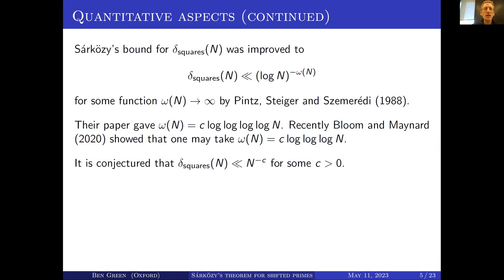In the other direction, it's conjectured that there's a power saving. What could be true is remarkably stronger than what's actually known. It's conjectured that if you take a subset of {1,...,n} of size n^{1-c}, for an appropriately small positive constant c, then there should be two elements in there differing by a square.